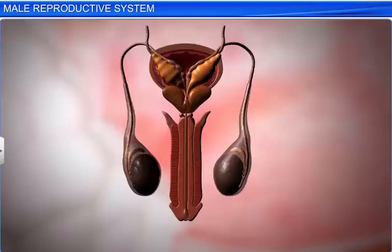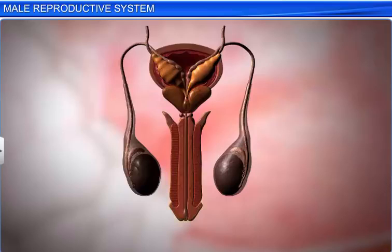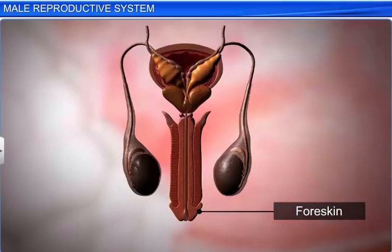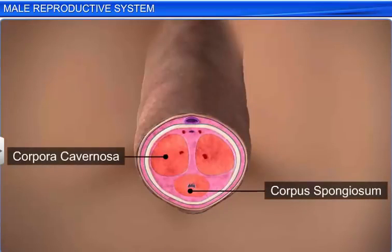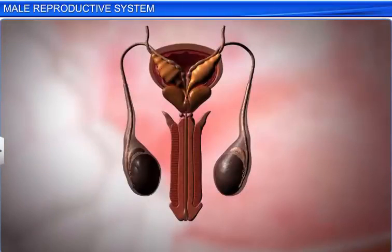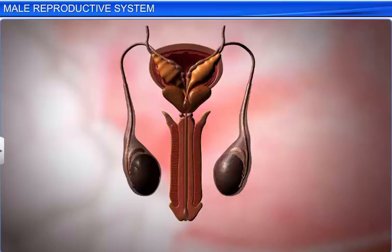The external genitalia in males is called the penis. The penis is a copulatory organ and is covered by a loose sheath of skin. The skin that hangs over the tip of the penis is known as the prepuce, or foreskin. It is made up of special tissues like corpora cavernosa and corpus spongiosum. The tip of the penis, covered by the prepuce, is called the glans penis. The penis, urethra, vas deferens, and Cowper's gland together help in copulation and in the deposition of sperm within the female.